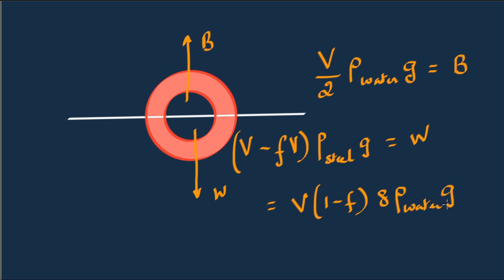Since it is floating, the weight is equal to buoyancy, so density of water and g cancel on both sides. V cancels, and so we have 8 times 1 minus F is equal to half.